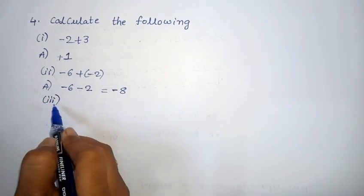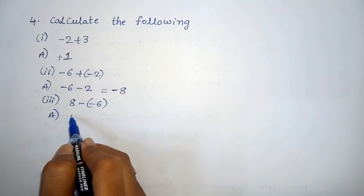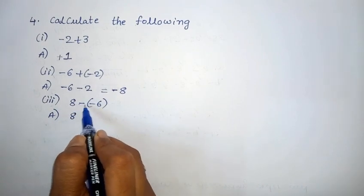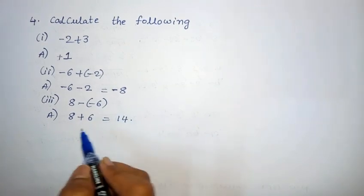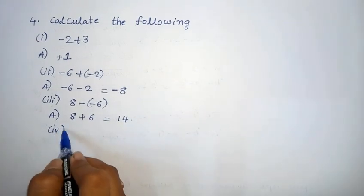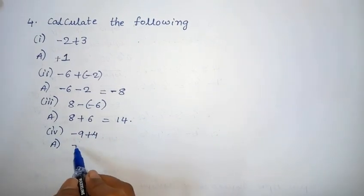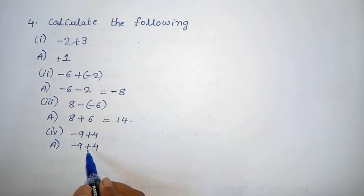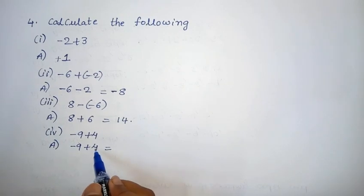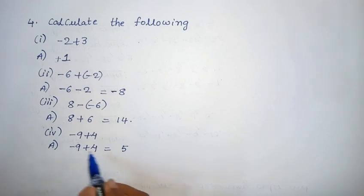4th Roman 3rd one: 8 minus (minus 6). Minus times minus equals plus, so it becomes 8 plus 6 equals 14. 4th one: minus 4 plus 4. The signs are opposite, so subtract: 9 minus 4 equals 5. The bigger number is 9 with a minus sign, so the result is minus 5.